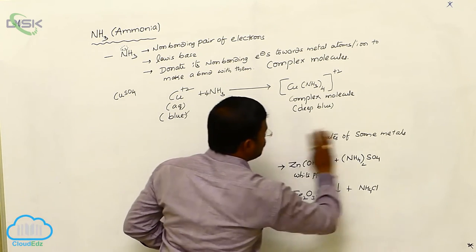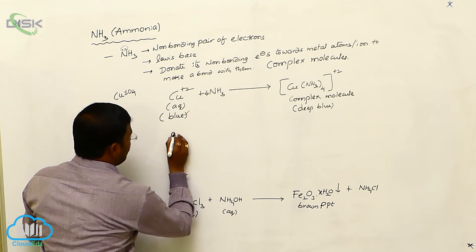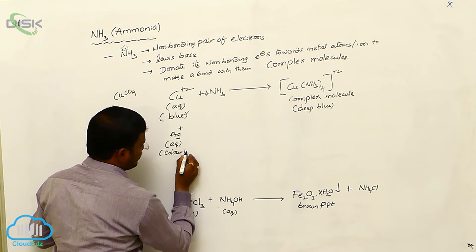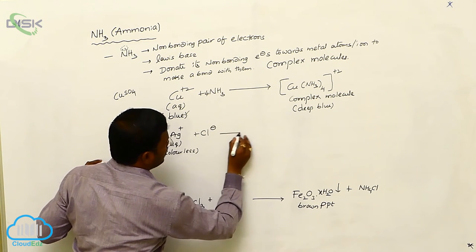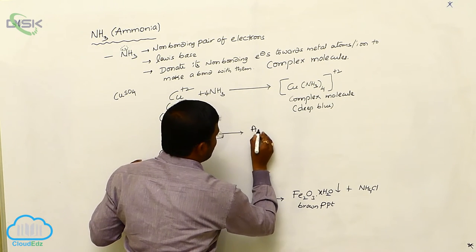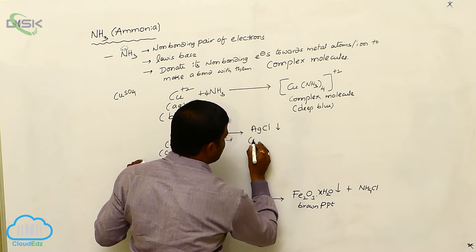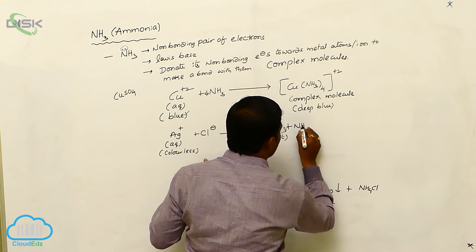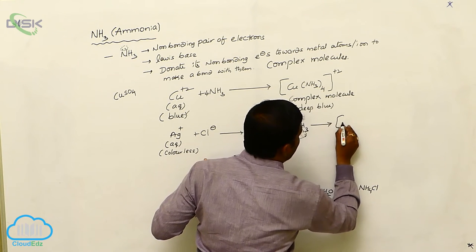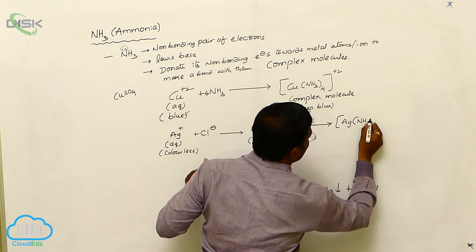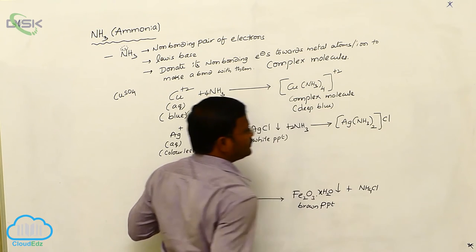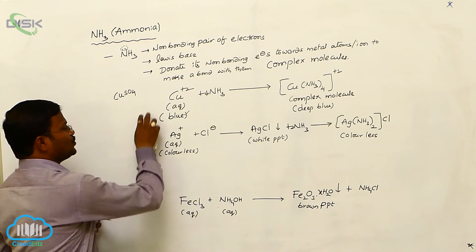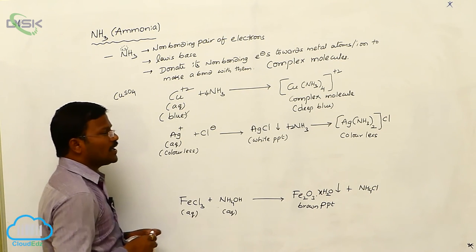Another example showing the Lewis basic character of ammonia: silver ions in aqueous solution are colorless. When reacted with chloride ions, silver cations react with chloride ions to produce a white silver chloride precipitate. This white precipitate then reacts with 2 moles of ammonia to produce the complex [Ag(NH₃)₂]⁺, which is a colorless complex molecule.